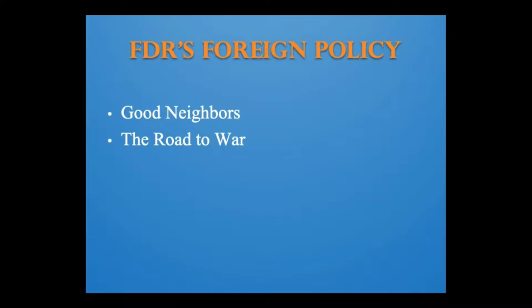But Roosevelt, like previous presidents, recognized undemocratic governments like that of Somoza in Nicaragua, Trujillo in the Dominican Republic, and Batista in Cuba. However, the United States also took steps to counteract German influence in Latin America by expanding trade and promoting American culture.